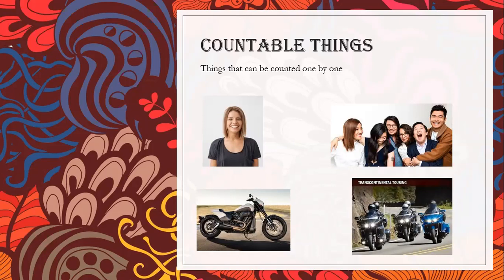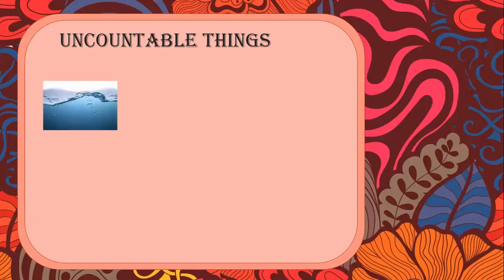Now let's see the uncountable things. But first, when talking about countable nouns, it's important to know how to change from singular into plural. Normally, the simple way is to put an S. For example, 'chair' is countable — one chair, two chairs. You just put the S to change from singular to plural: chair, chairs.